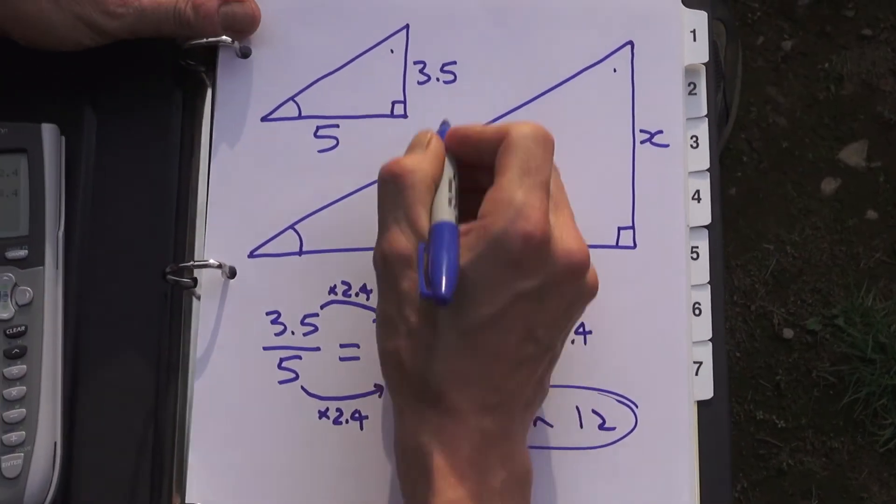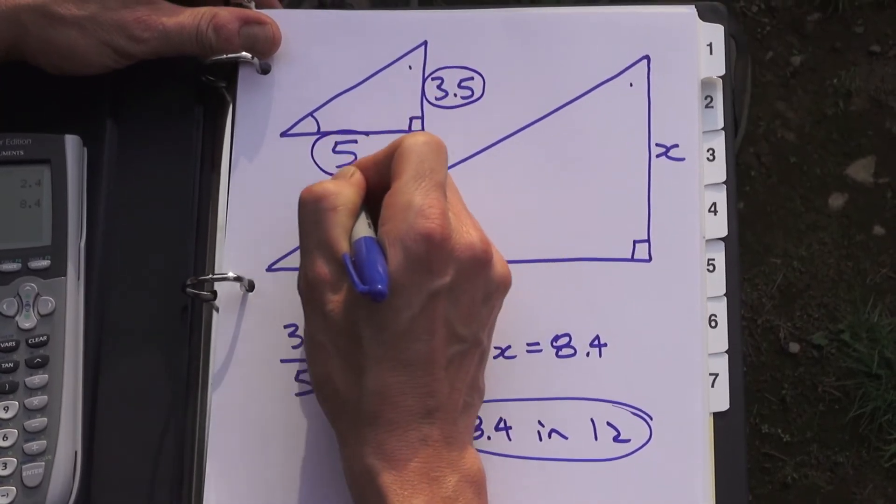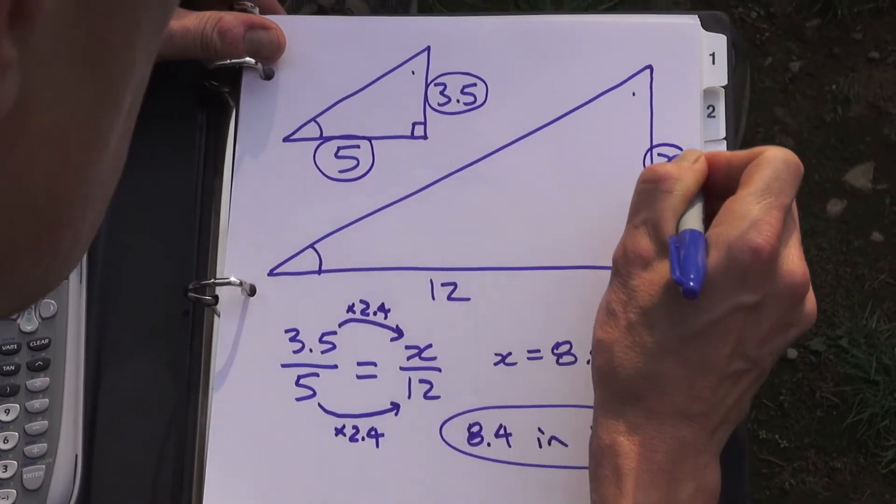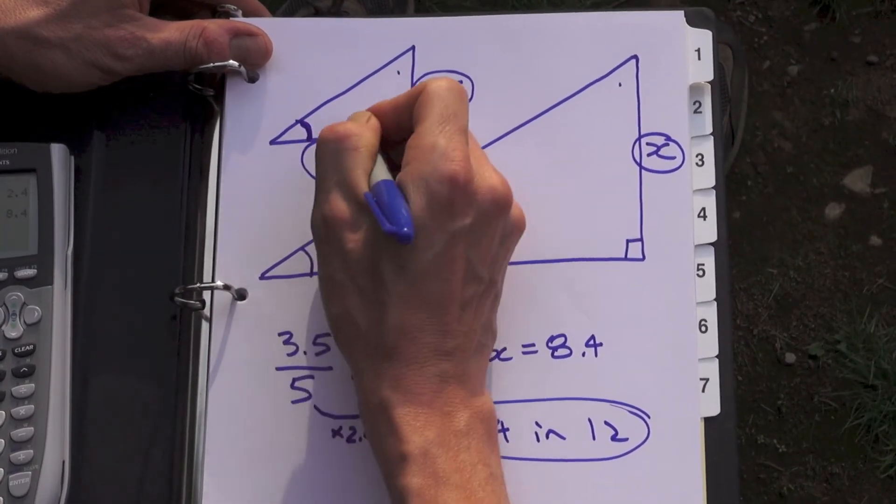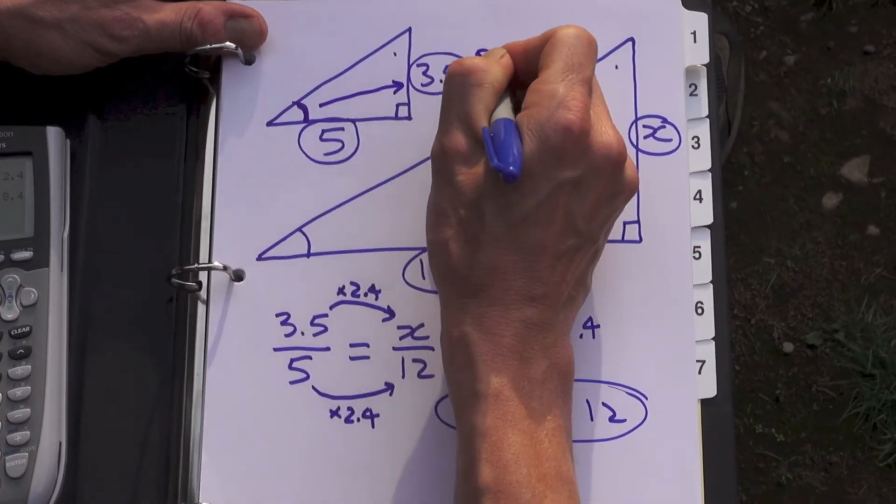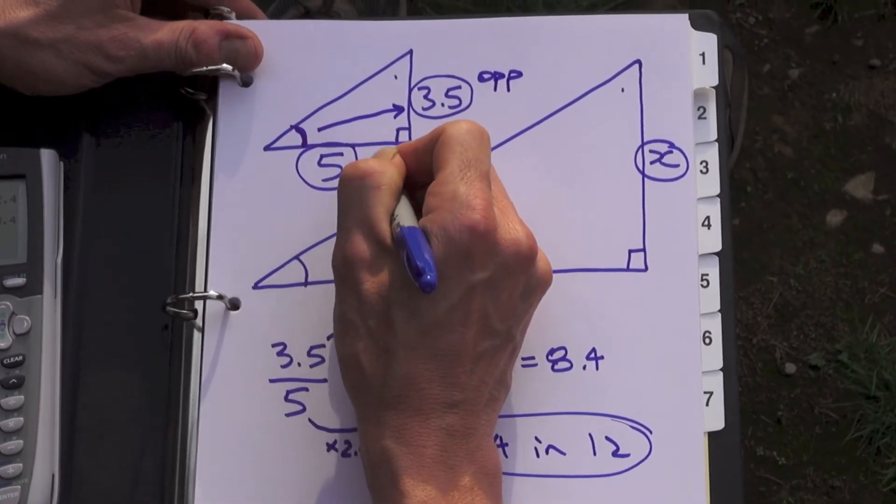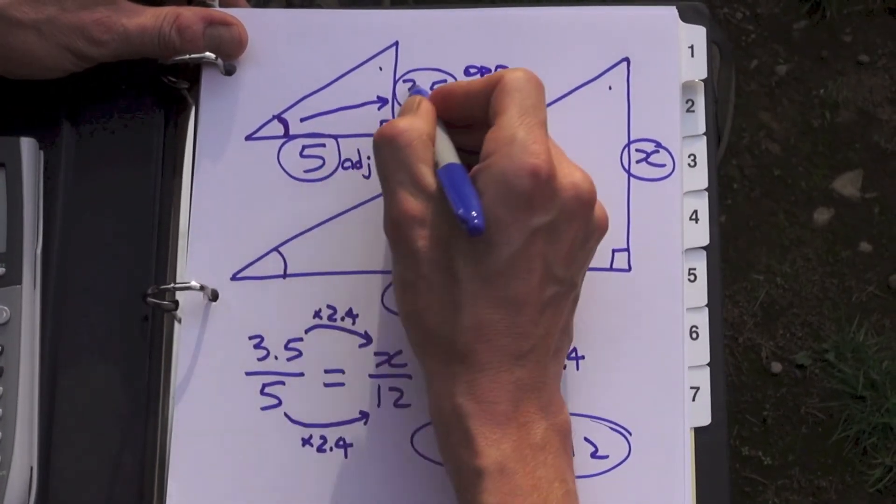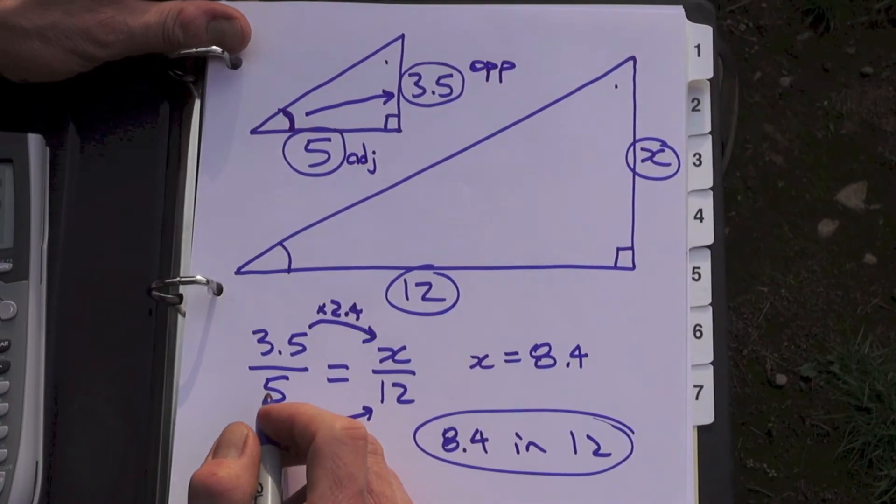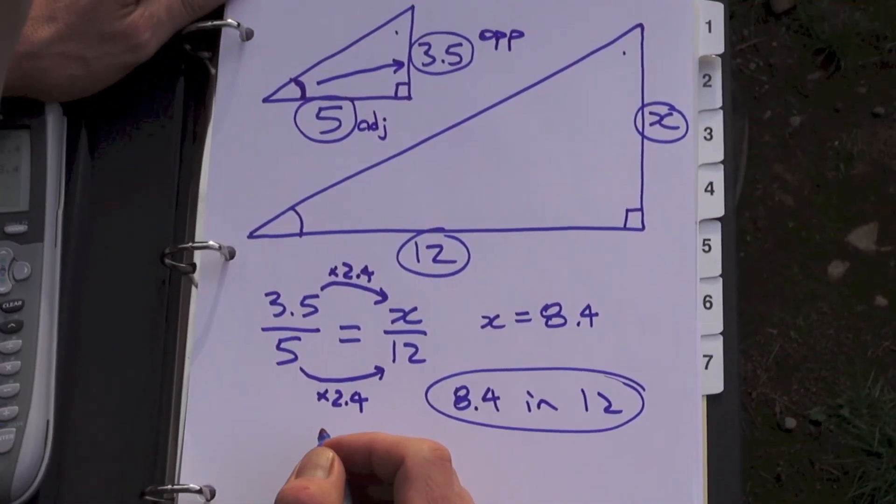Now while we have this triangle here, this ratio we use, if you're looking at that triangle from this angle down here that's the opposite side and this is what you call the adjacent side, it's right next to the angle. That's an important ratio when you're talking about triangles and starting to talk about trigonometry. The opposite divided by the adjacent is actually the tangent ratio.